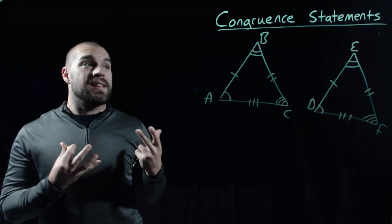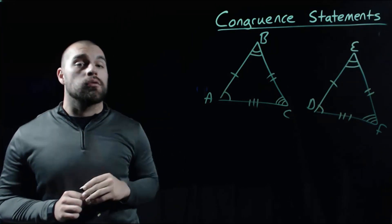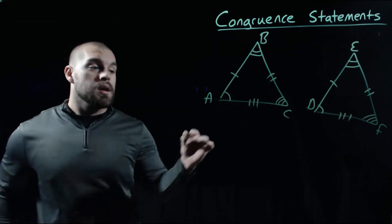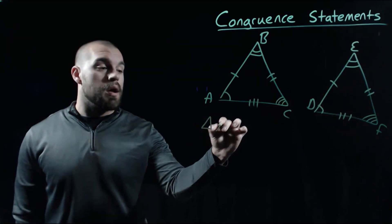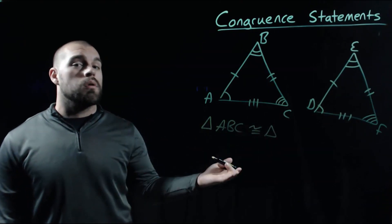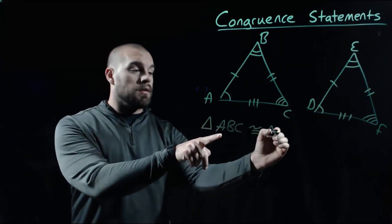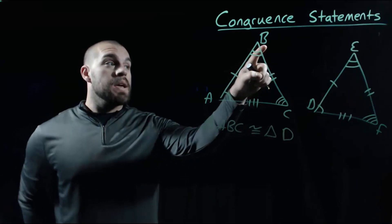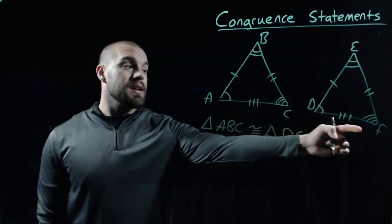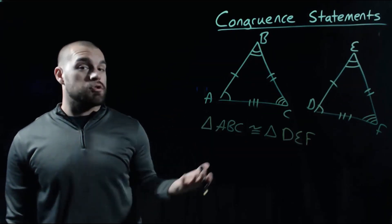We can write out a statement that says these two figures are congruent. One thing we have to be careful about is that we have to match up the congruent vertices or corners of our shape. If we name our first triangle ABC, we have to keep the same order when identifying the second triangle. Angle A is congruent to angle D, so we start with D; B is congruent to E, so E comes next; and angle C is congruent to angle F. So we have to call that second triangle DEF.